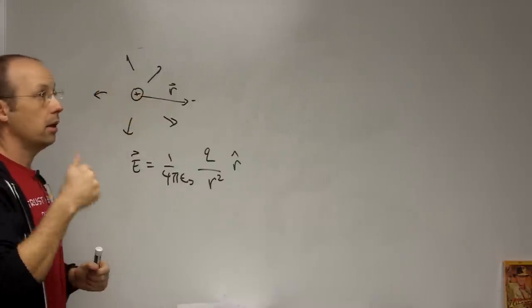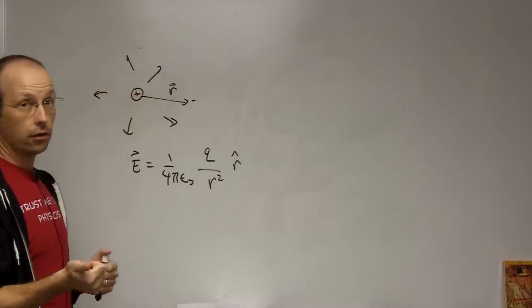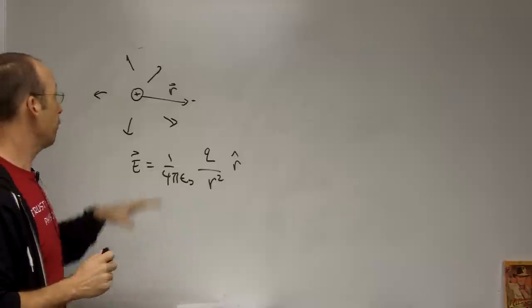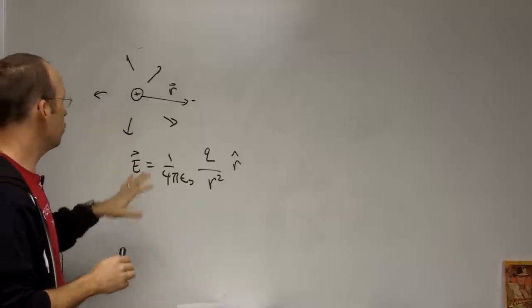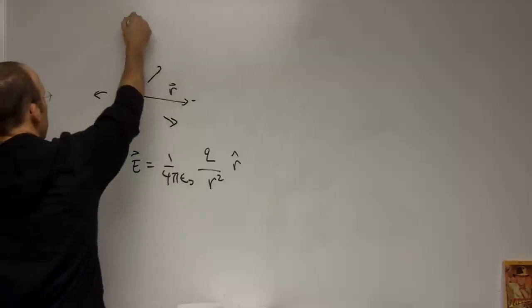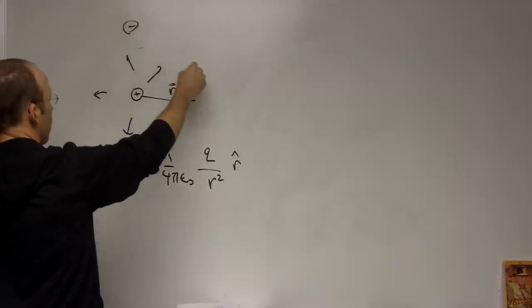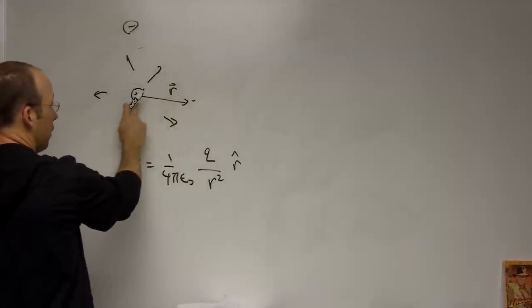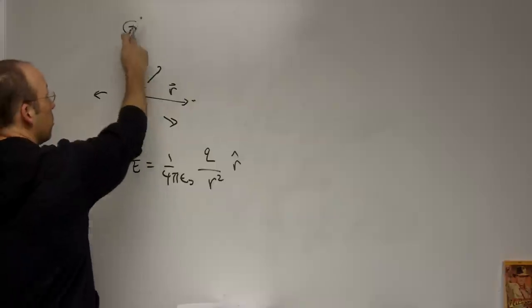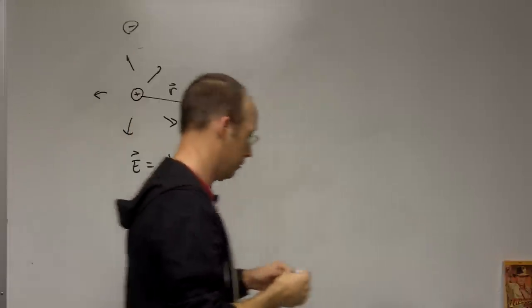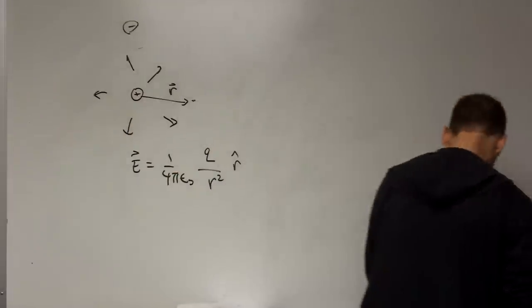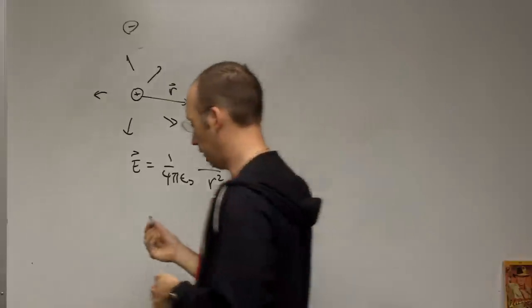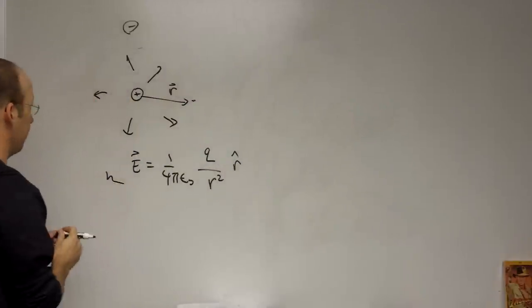You rarely just have one charge. The electric field obeys the superposition principle, so if I have two charges — say a negative charge right here — the electric field at any location is the electric field due to this charge plus the other charge. You can simply add them together.